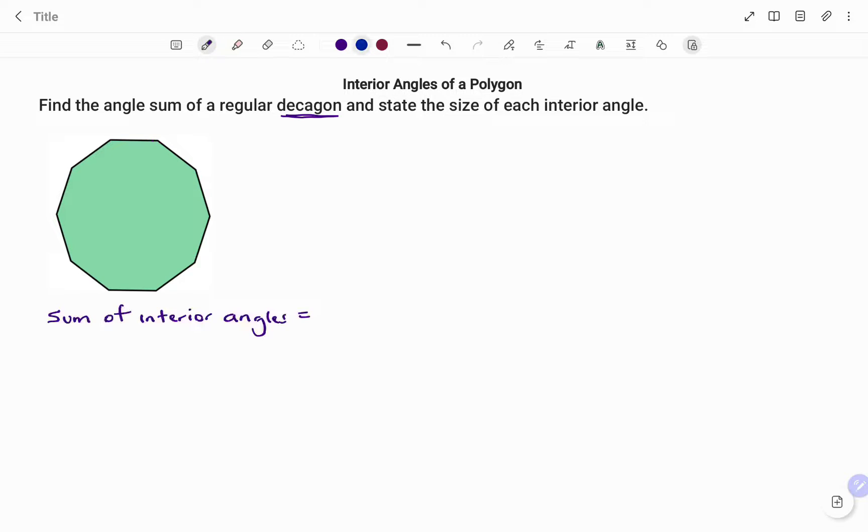A decagon is a polygon with 10 equal sides. So therefore, finding the sum of all the angles, the formula will be—first we need to find how many angles does the decagon have. We know it's 10.